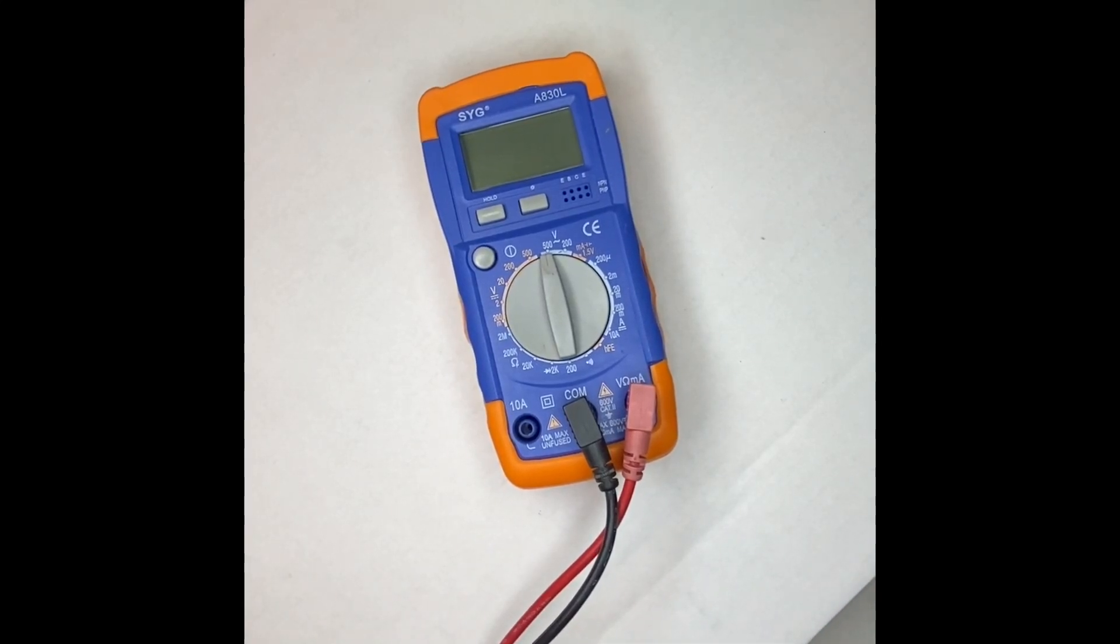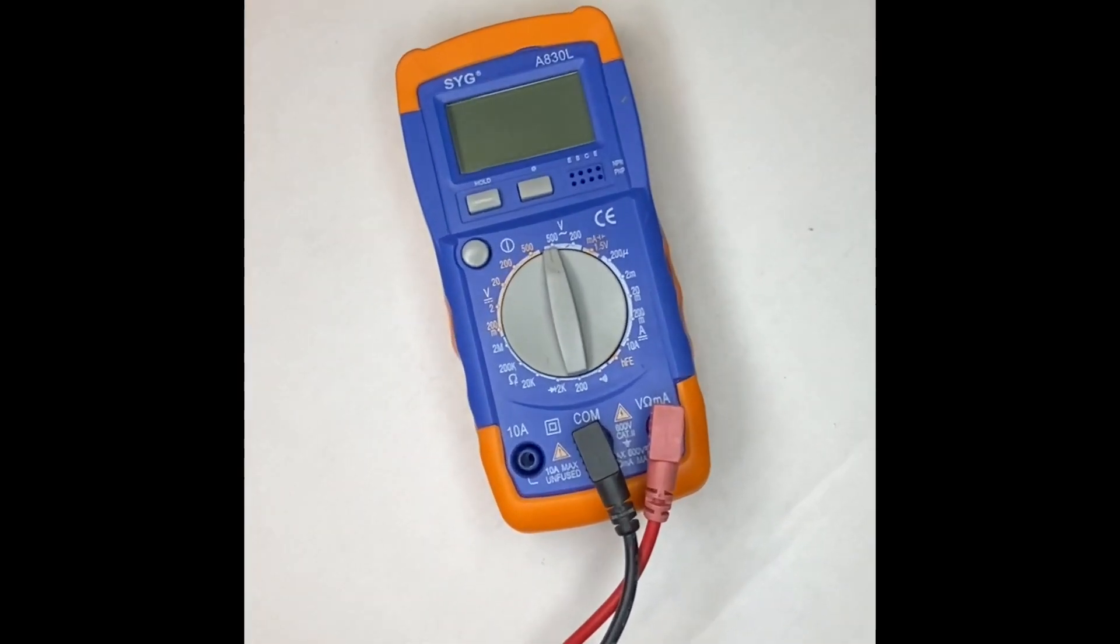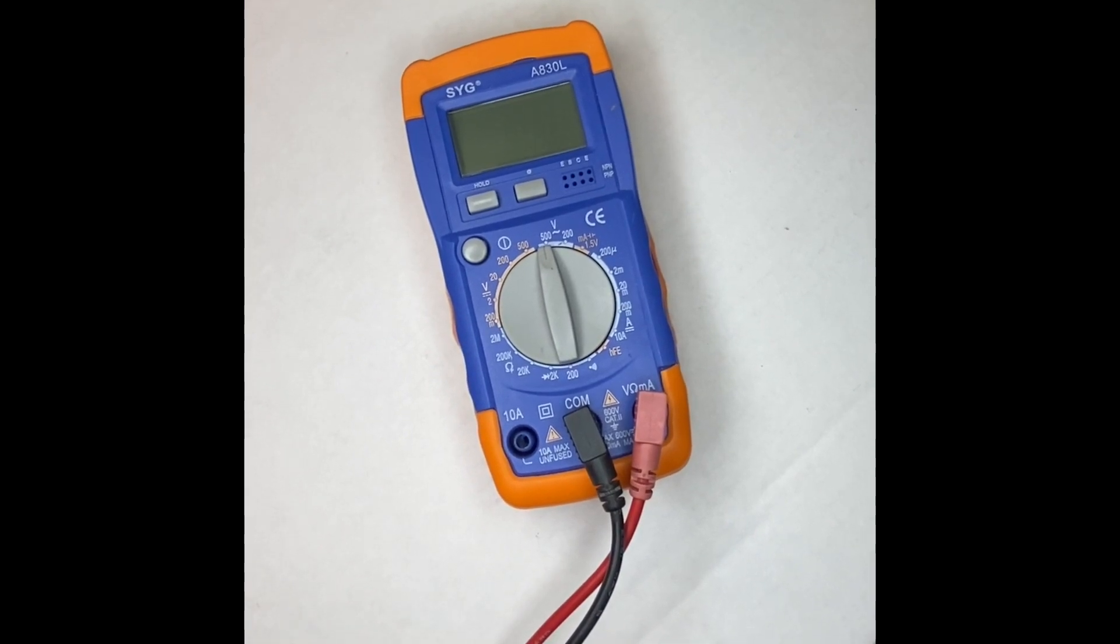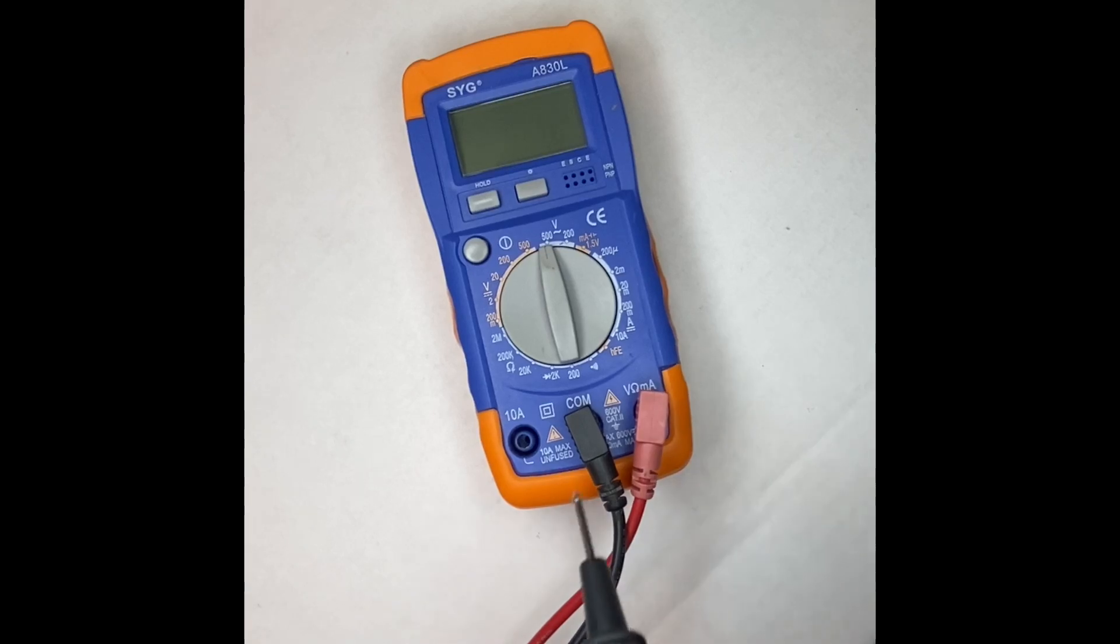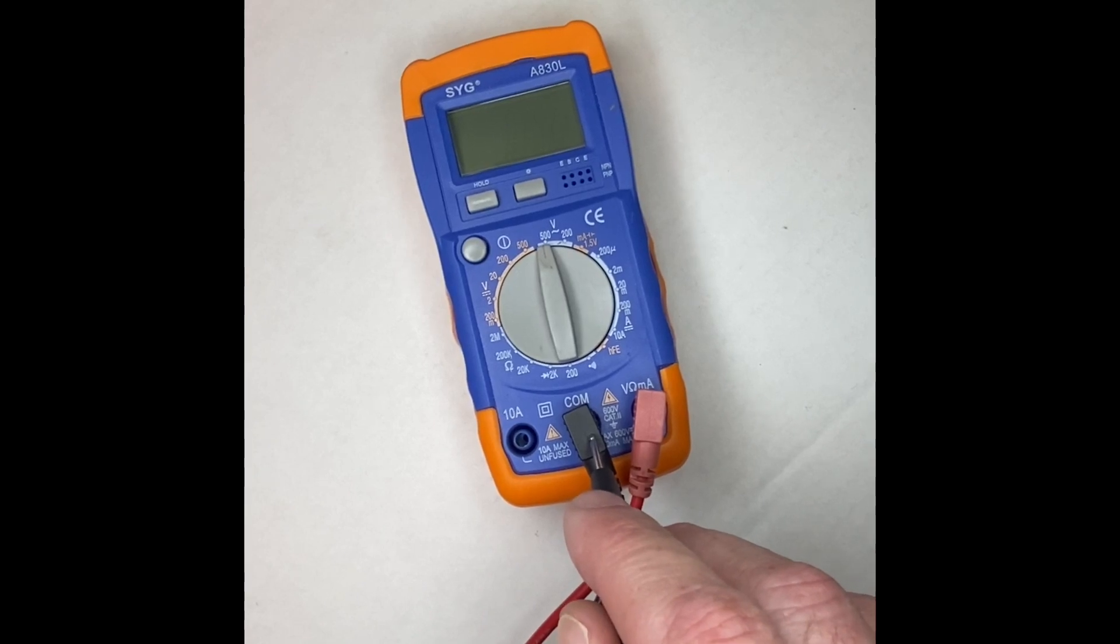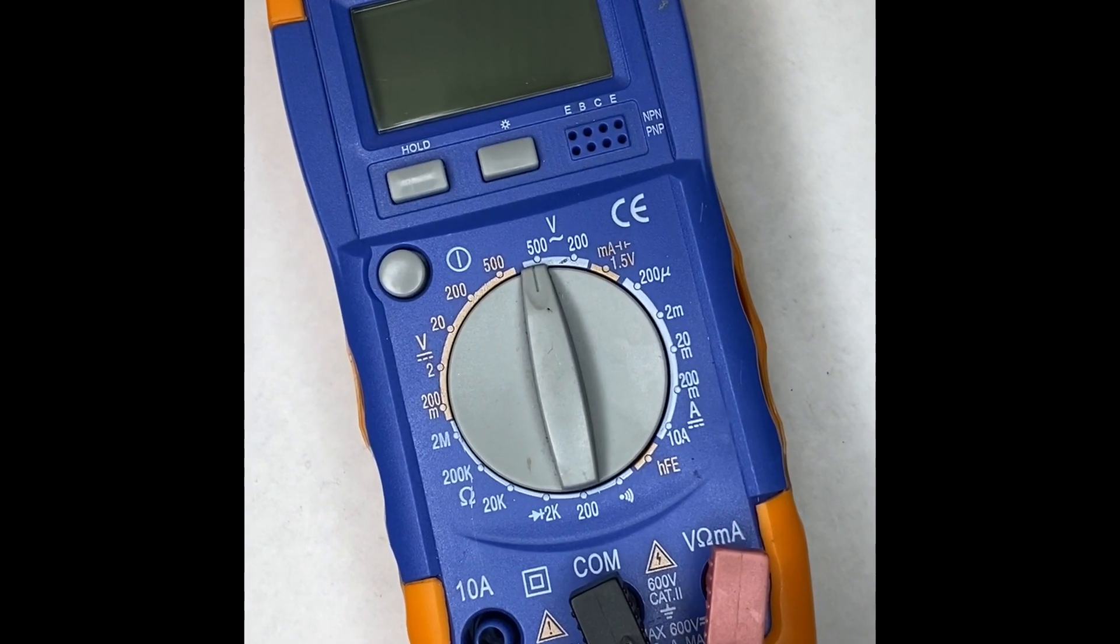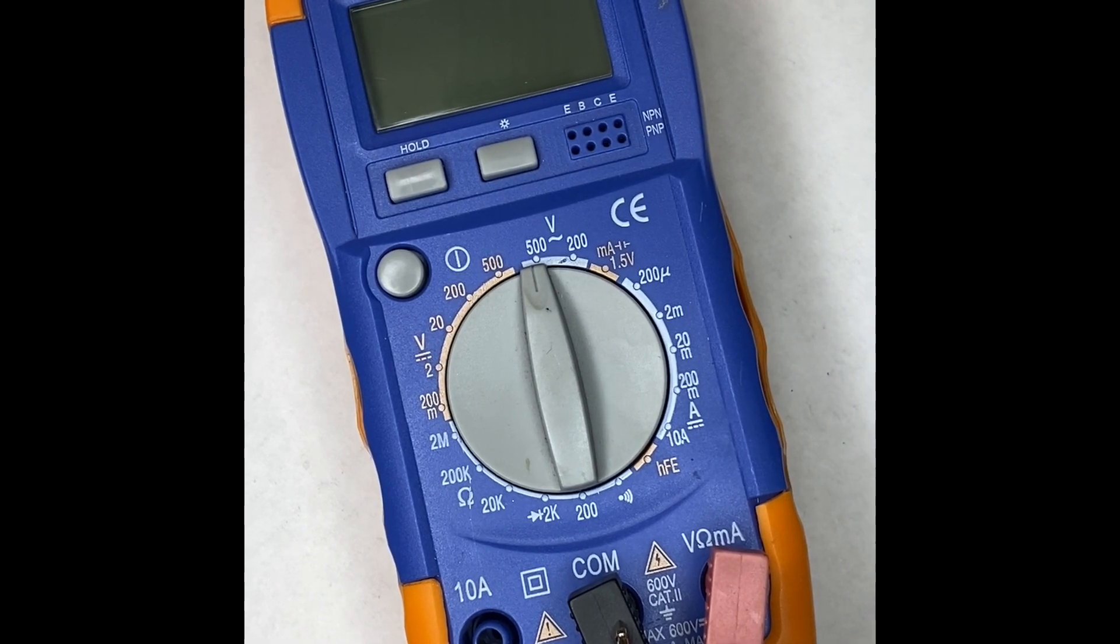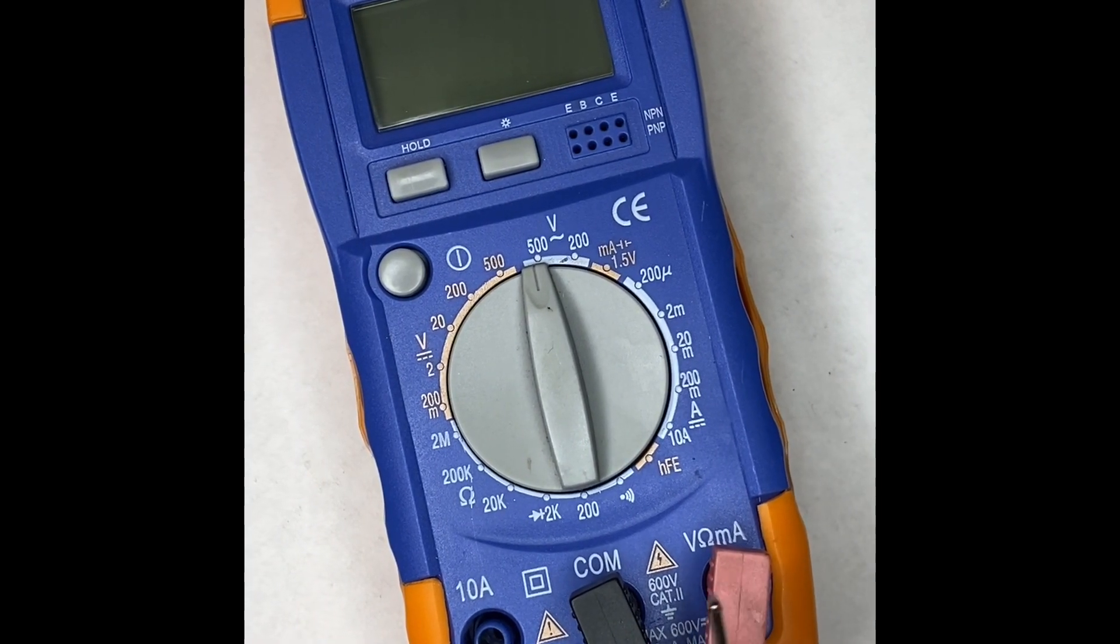All right, so here's a pretty typical multimeter. The first thing you're going to do when you get your multimeter is you need to plug your probes into the meter. So the black probe is always going to go in this common port here, and the red probe, depending on what you want to measure, is going to go in...